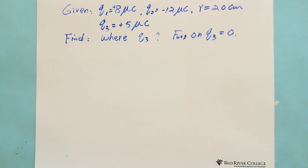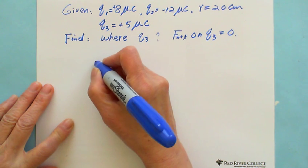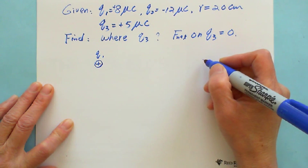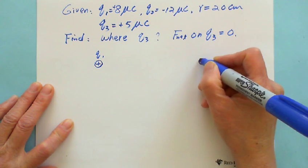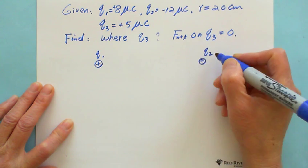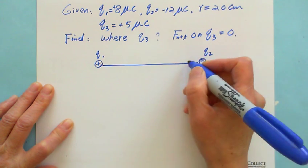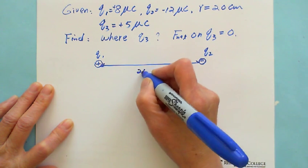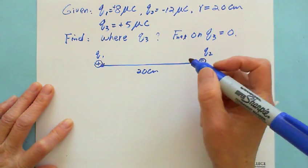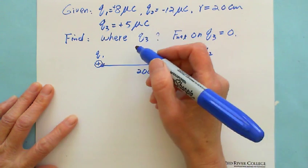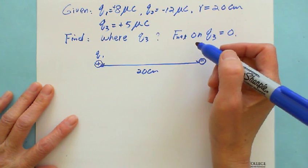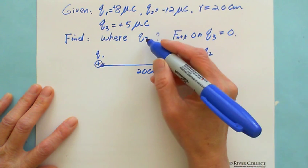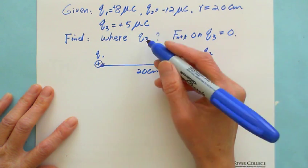So that's what we're looking for in this situation. We draw a picture: we have Q1 positive and Q2 negative. The distance between is 20 cm. Q3 is 5 microcoulombs, but we don't know where it is. We're looking for where Q3 can be placed so that the force acting on Q3 will be 0 — so that Q3 can be balanced.